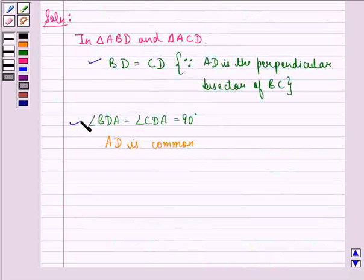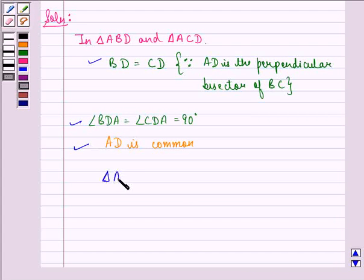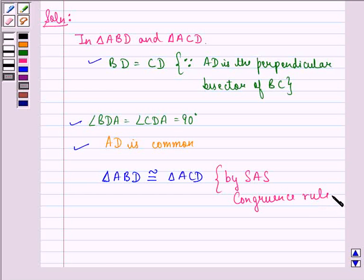By these three things, we have triangle ABD is congruent to triangle ACD by SAS congruence rule, that means side angle side.